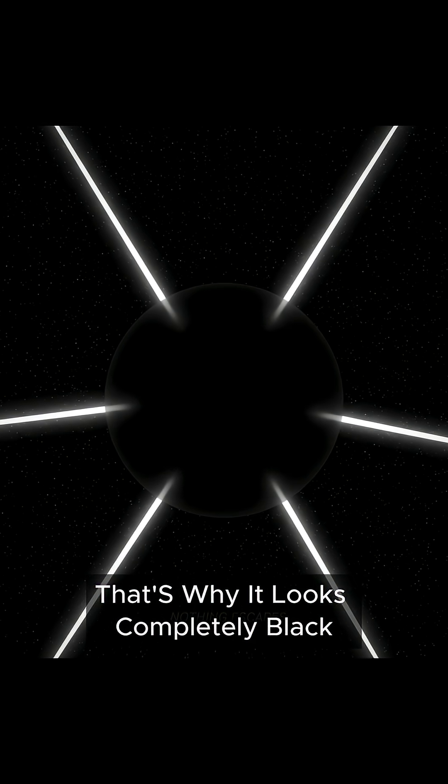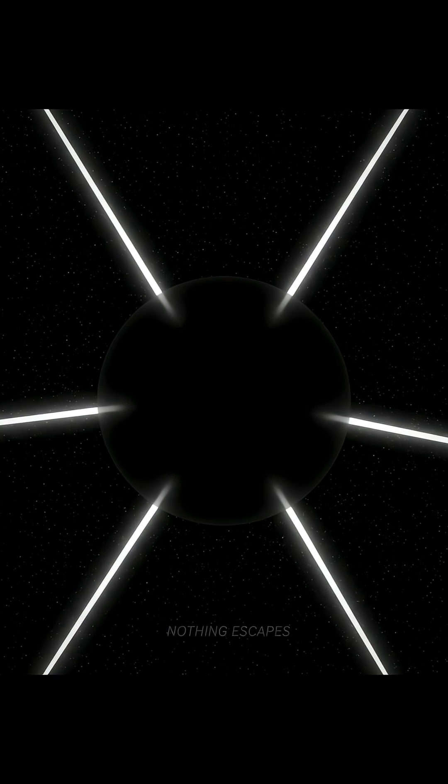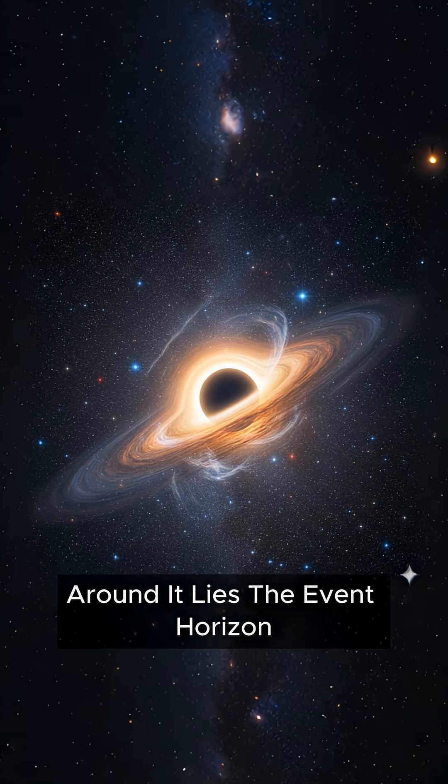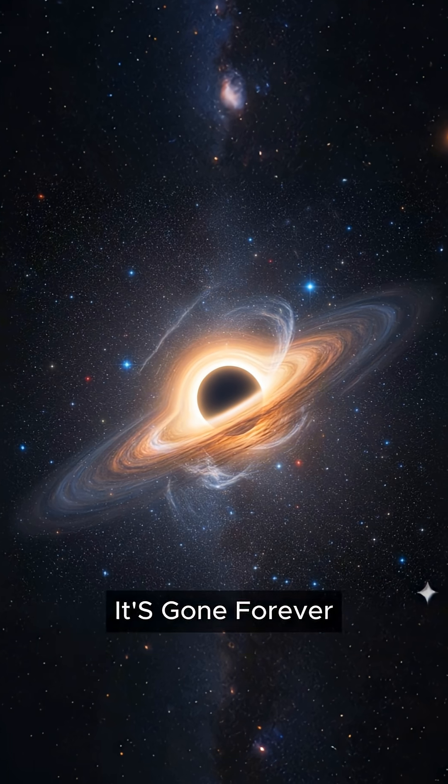That's why it looks completely black - a region of space where the rules of physics start to break down. Around it lies the event horizon, a point of no return. Once something crosses it, it's gone forever.